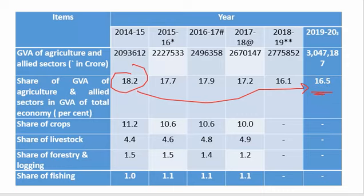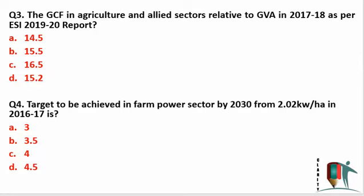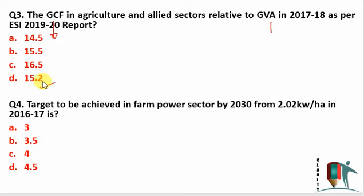Question 3: The GCF (Gross Capital Formation) in agriculture and allied sector relative to GVA in 2017-18. GCF is related to long-term asset formation like irrigation structures and cold chain structures, while GVA is related to how much value is produced. The contribution in GCF is around 15.2 percent — as mentioned in the 2019-20 report, around 15.2 percent of the value of goods produced is used for capital formation in agriculture.